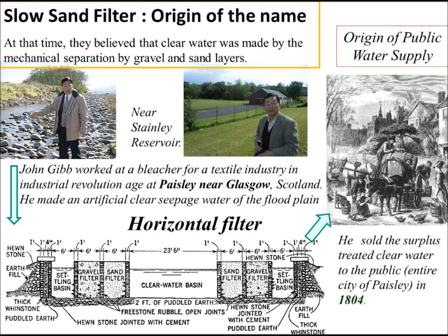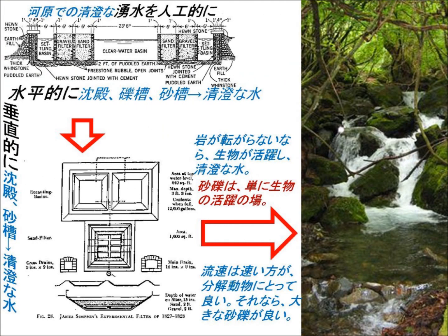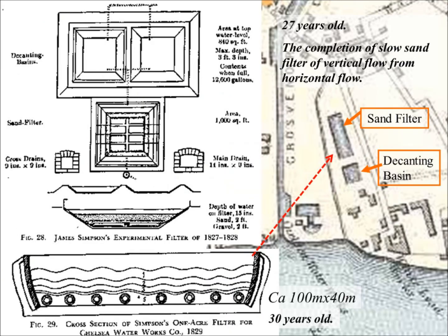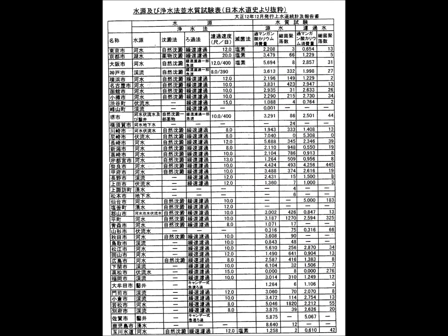In Scotland and England, artificial suspended-free water has been made from river water passing slowly through gravel and sand layers as a public water system. They called it a slow sand filter, or English filter.